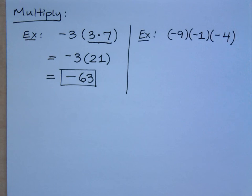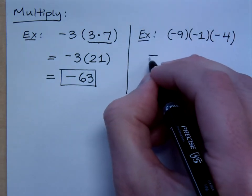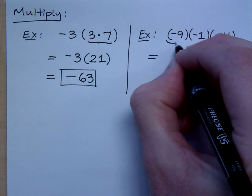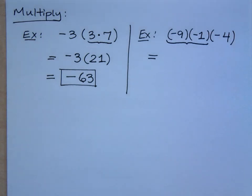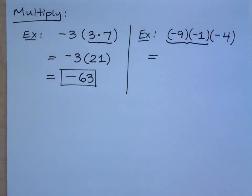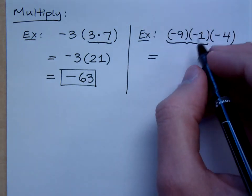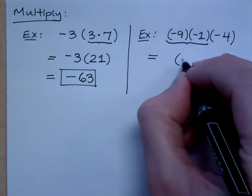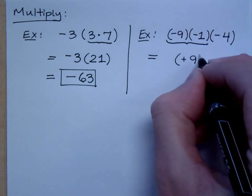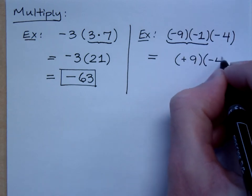You've got to go with this piece by piece. So, if I look here and I multiply these first two factors together, what do you get? Positive 9. You get a positive 9, right? Yes. So, this is a positive 9 and then times negative 4.